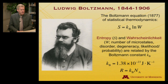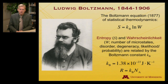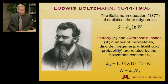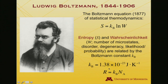In 1877, he wrote down S = K log W, where S is entropy — a phenomenon we'll deal with in a few weeks. The K_b is Boltzmann's constant. You can see it here on the slide in units of joules per Kelvin, and it takes on that particular value.